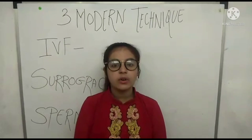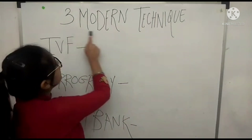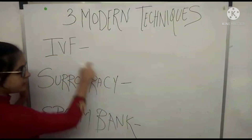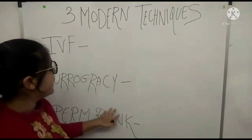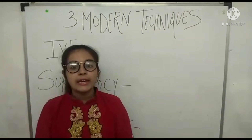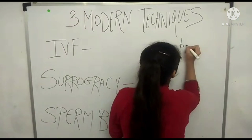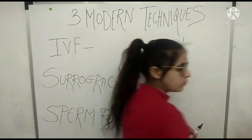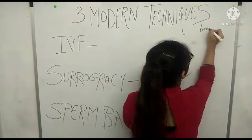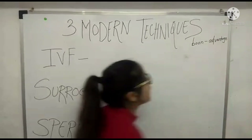Friends, this is Praprit Kaur and today we are going to deal on the concept of three modern techniques: IVF, Surrogacy, and Sperm Bank. These are three techniques which are a boon — boon means an advantage — to the childless couple, and they can have a child by these techniques.